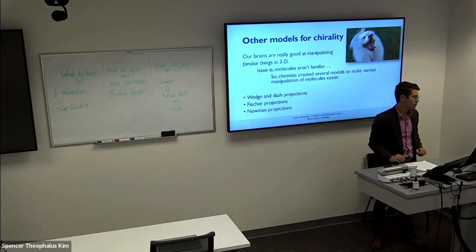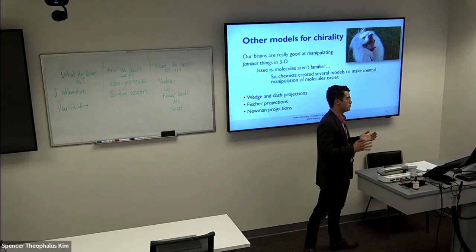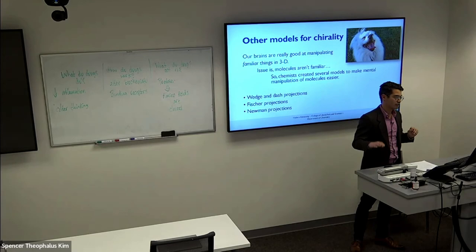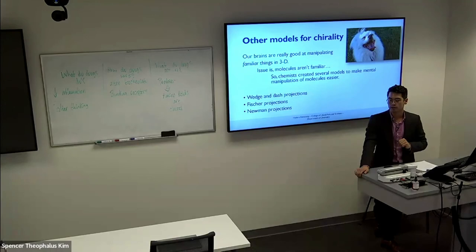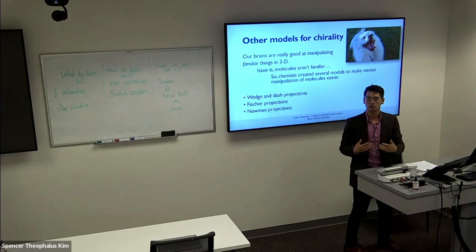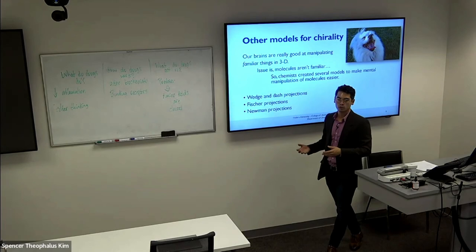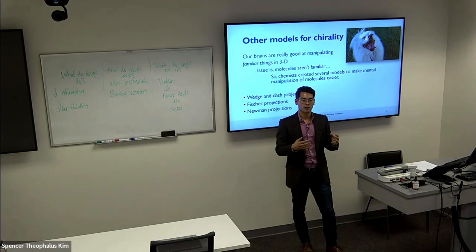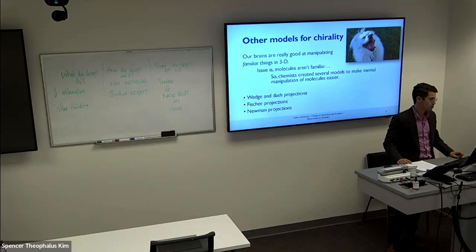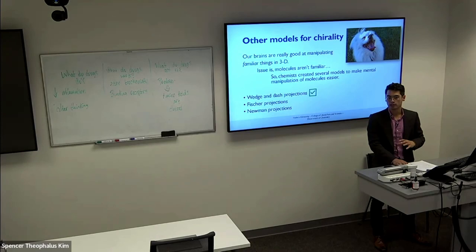There are a number of models for chirality. In general, our brains are really good at manipulating things that are familiar to us. If you looked at a front profile of a dog and I asked you to describe what the side profile looks like, no one would struggle with that. The issue is in chemistry we're working with molecules, and molecules aren't familiar objects to us, so we struggle to do that mental manipulation. To deal with this, we have several different models to project a 3D chiral center as a 2D representation. The one you're familiar with is wedge and dash projections. The other two — Fisher projections and Newman projections — are going to be new to you. We'll go over Fisher projections for the rest of this section, and next time we'll bring in Newman projections.